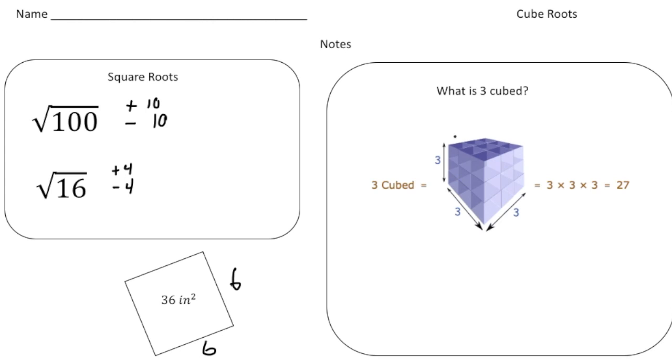This shows what 3 cubed looks like. 3 cubed is the length is 3, the width is 3, and also the height is 3. So I can rewrite this as 3 cubed equals, and when we multiply 3 times 3 times 3, we're really finding the volume of the shape, and 3 times 3 times 3 equals 27.